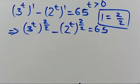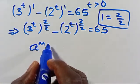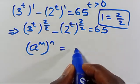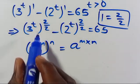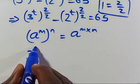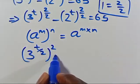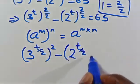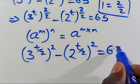From here we recall from the law of indices that when we have a to the power of n in parenthesis to the power of n, it can be simplified as a to the power of n times n. So applying it here we can have 3 to the power of t over 2 in parenthesis to the power of 2, minus 2 to the power of t over 2 in parenthesis to the power of 2, equals 65.